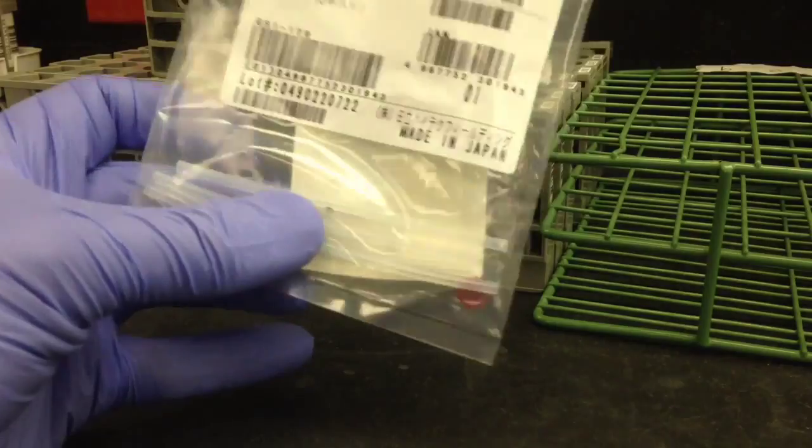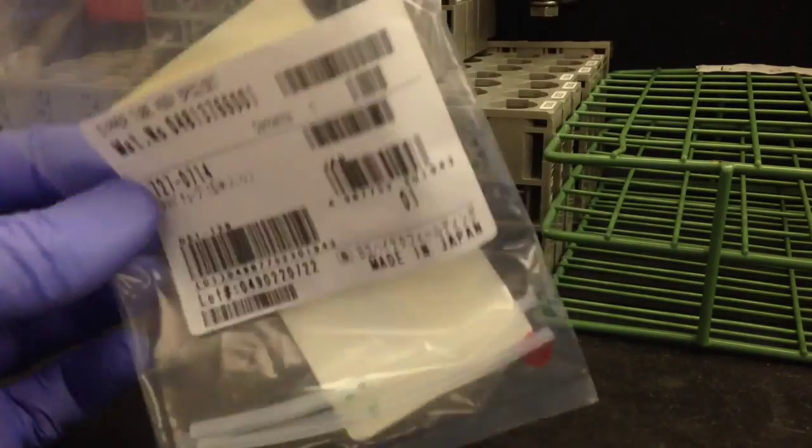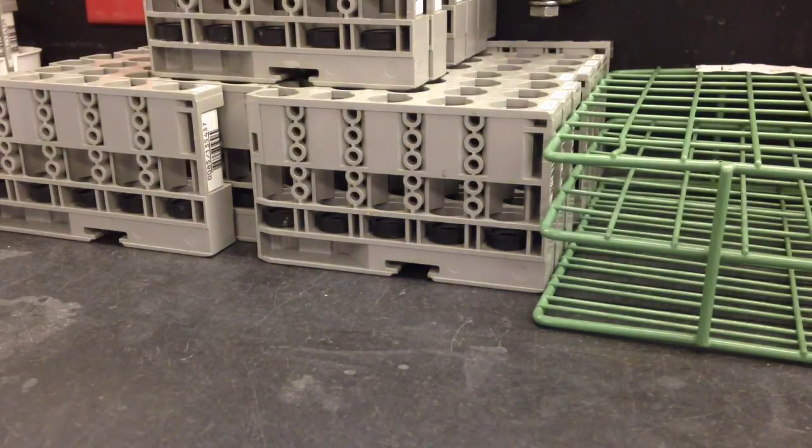For this maintenance, all you're going to need is the tubing itself. Here you can see I've got it right here, sipper tube. You're only going to need one of those. It comes in packs of five.